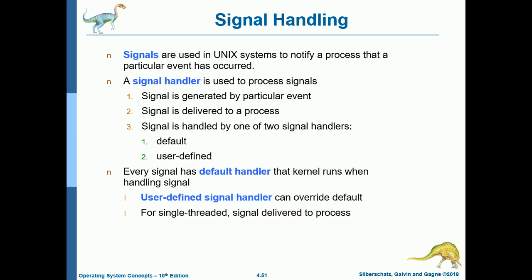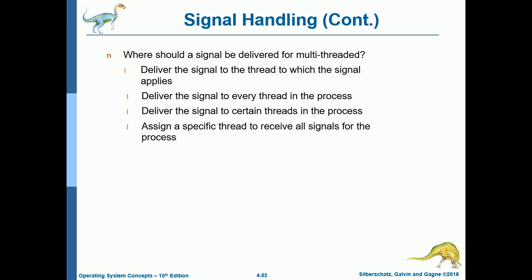Signals are used in Unix systems to notify a process that a particular event has occurred. A signal handler processes signals in three steps: the signal is generated by a particular event, the signal is delivered to a process, and the signal is handled by one of two signal handlers — default or user-defined. Every signal has a default handler that the kernel runs, but a user-defined signal handler can override it. For multi-threaded processes, the signal may be delivered to the thread to which it applies, to every thread, to certain threads, or to a specific thread assigned to receive all signals.